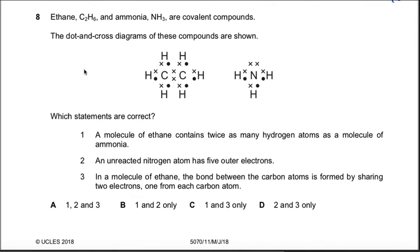Question number eight: ethane C2H6 and ammonia NH3 are covalent compounds. The dot and cross diagrams of these compounds are shown. These statements are correct: a molecule of ethane contains twice as many hydrogen atoms as a molecule of ammonia. That is right, because ethane has double the hydrogen atoms as compared to ammonia. First statement is correct. An unreacted nitrogen atom has five electrons in its outermost shell. Yes, second statement is correct. In the molecule of ethane, the bond between the carbon atoms is formed by sharing of two electrons, one from each atom. Yes, you can see that this carbon has one electron which is sharing the electron from the other carbon atom. So third statement is also correct, option A.